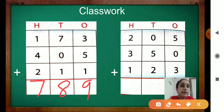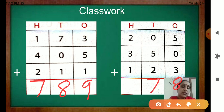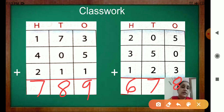Very good. Now the next one. 205 plus 350 plus 123. Now start adding from the 1s place. 5 plus 0 — how much? 5. And 5 plus 3 is 8. Now come to the 10s place: 0 plus 5 is 5, and 5 plus 2 is 7. Now the 100s place: 2 plus 3 is 5, and 5 plus 1 is 6. Check — is it correct? Our answer is matching. Very good. You finished your classwork.